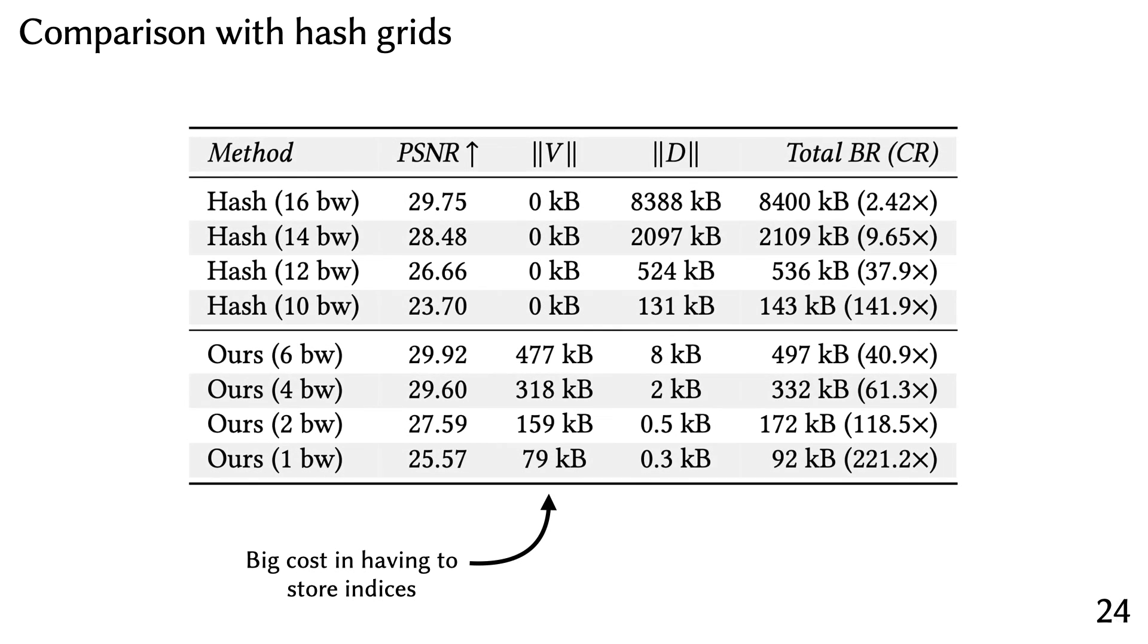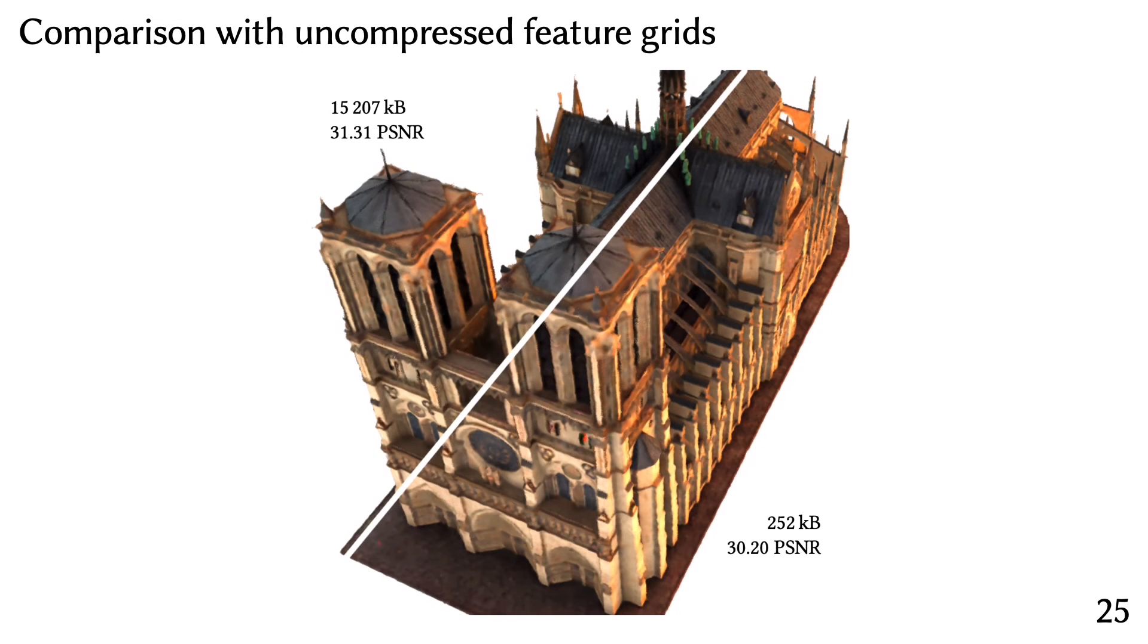Here are some more quantitative results. We see here that, although we get away with smaller codebooks, we incur significant costs in having to store indices. Here is a comparison against an uncompressed feature grid reconstruction. We incur around a 1 PSNR degradation in quality, but in return for close to 100x less memory.